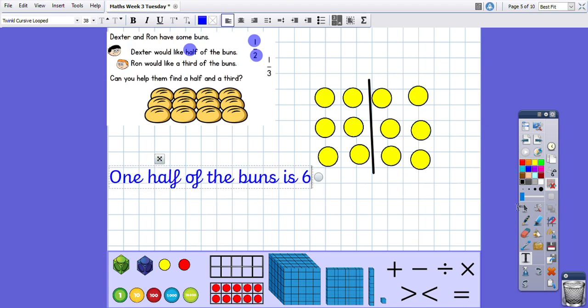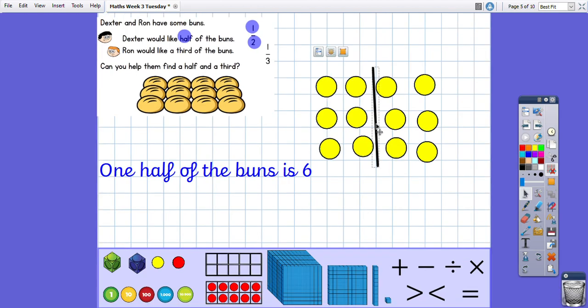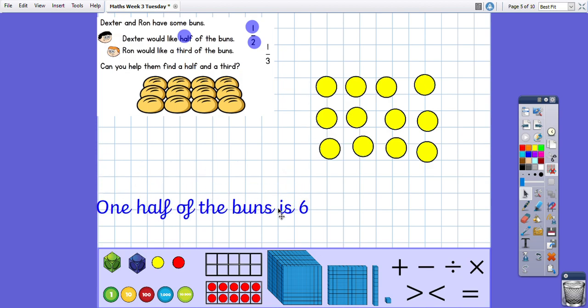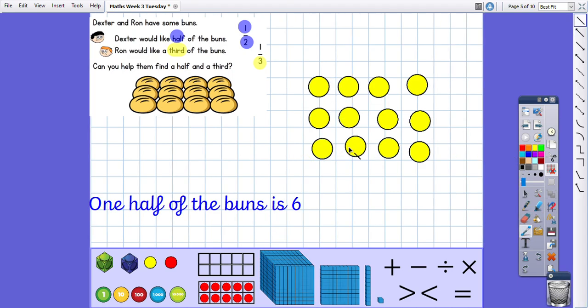So now what I'm going to do is take away my line and go back to the buns. Okay, so this time, Ron would like a third of the buns. So we need to remember that when we're looking at one third, we want three groups. Now, how can I do that? I'm going to look at splitting my array, my buns, into three vertically, just like I did with the half.